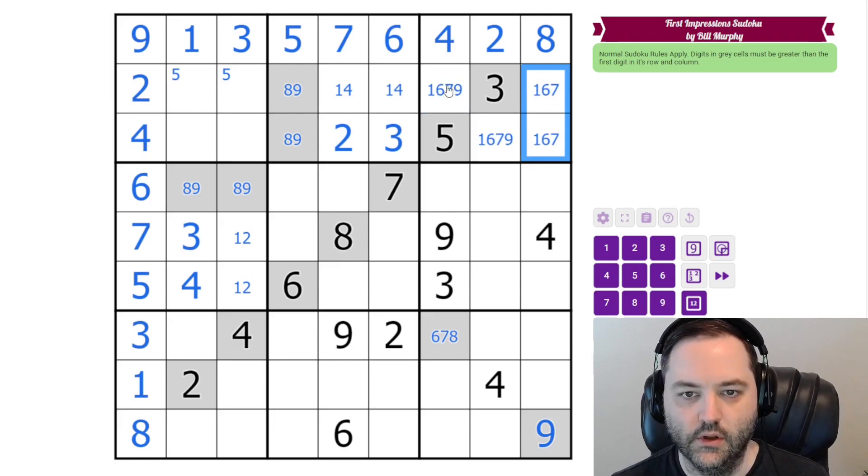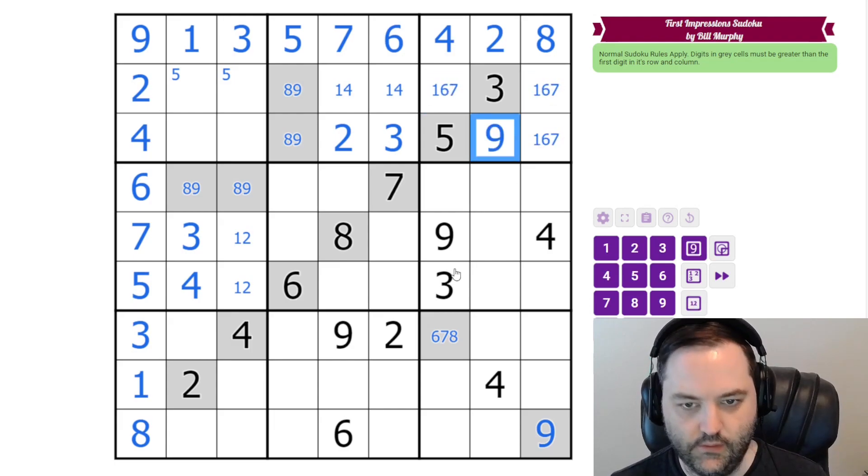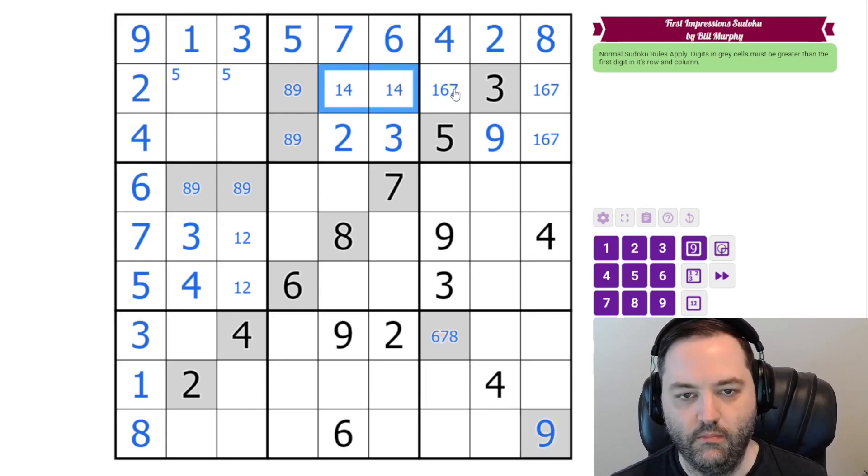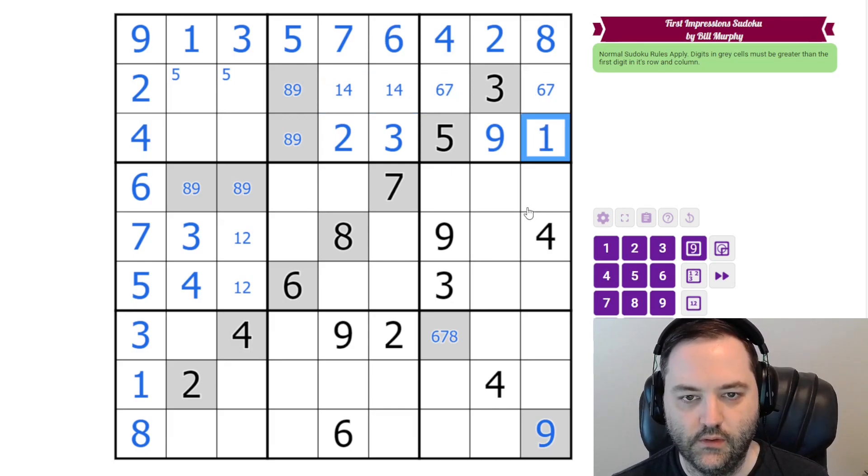I'm going to go ahead and fill those in and look at it. So none of those can be 9. This is our 9. You could have seen that directly from these two 9s. And also, we have a 1, 4 pair here, so neither of these are 1. So that's a 1.